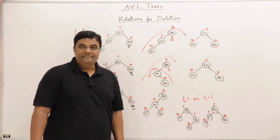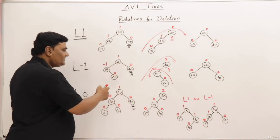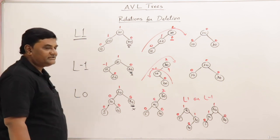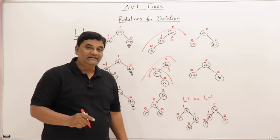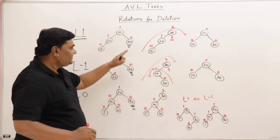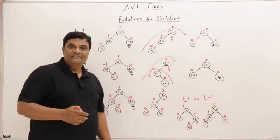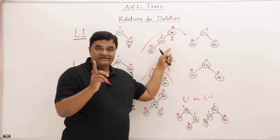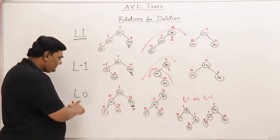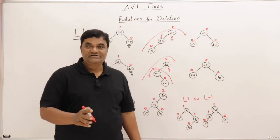Those are the L rotations — L1, L-1, and L0 — used when deleting from the right side causes left-side imbalance. The R1, R-1, and R0 rotations are mirror images of these three cases: deletion is done from the left side and the tree becomes imbalanced on the right side. Where we had LL rotation, there we have RR rotation; where we had LR rotation, there we have RL rotation. You can try out the R rotations by yourself. That's all about rotations at the time of deletion.